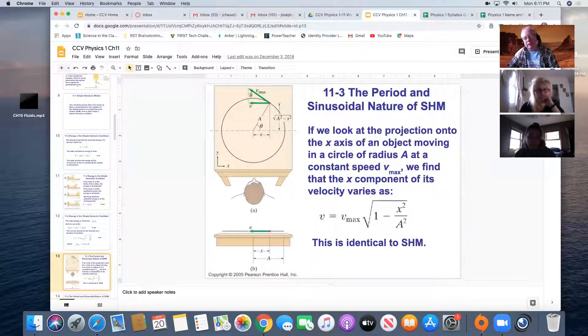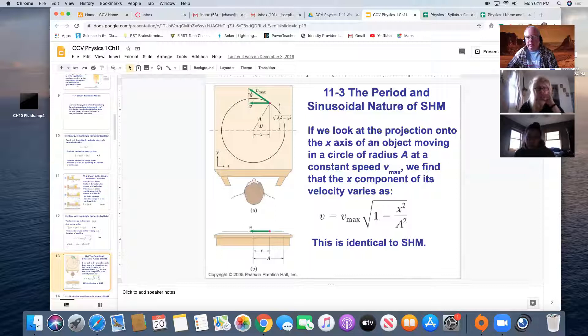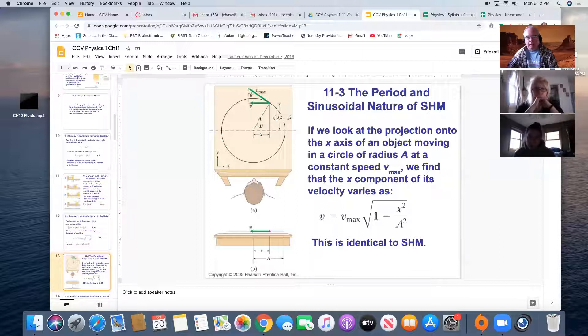If you take this equation, which shows kinetic and potential equaling the total energy, you can reverse engineer that formula to get an idea about how fast it's going to be going at that equilibrium point, because all the energy is going to be kinetic at that point.